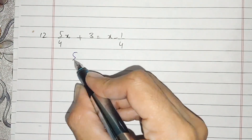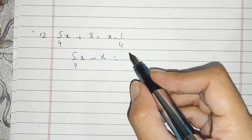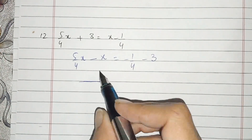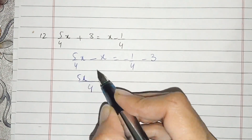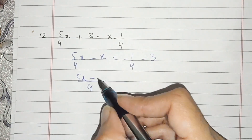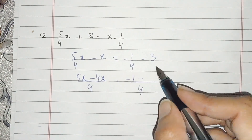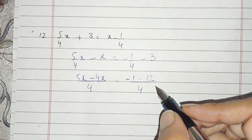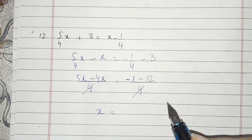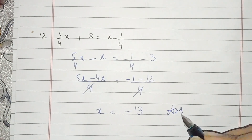Now, students, part number 12. 5 over 4x minus x — position changes, we get x and minus 1 over 4, and minus 3. We get 4. 4: 1 times 4 is 4. 5x and 1, 4 times 4 is 1. 4 times 4, x multiply, we get 4x. And minus 1, and 4 times 3 is 12. The 4 cancels with 4. From 5 minus 4, we get x. And 1 minus 12, adding 12 to 1, we get minus 13. This is the answer of the 12th part.